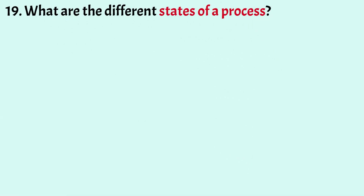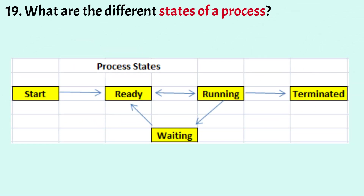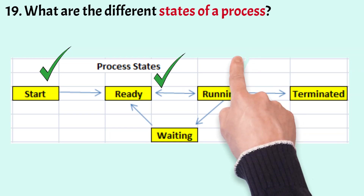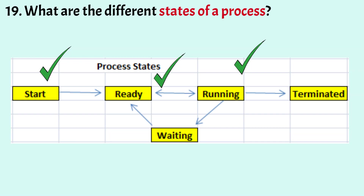What are the different states of a process? A process goes through various states: new — when a program is picked up by the OS into main memory; ready — the process is waiting for the processor to be assigned; running — the process is being executed by the CPU; wait — the process waits for a resource or user input while the CPU picks up another process; and terminate — when a process finishes execution it is removed from main memory.